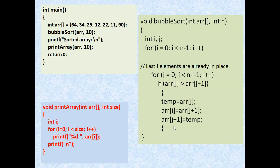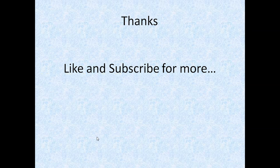Once sorted, we come back and the print array function is called. The now-sorted array is passed to it along with the size. We make a simple loop from 0 to less than size and print the elements, getting all the sorted array printed out. So in this video we discussed how to implement bubble sort in C programming. If you have any comments or queries, you can ask in the comment section. Thank you for watching — please like and subscribe for more.